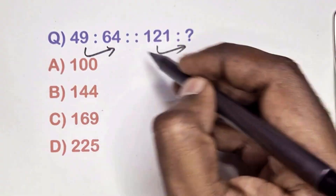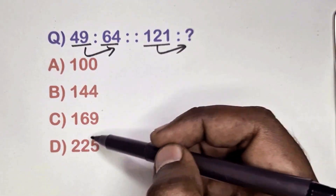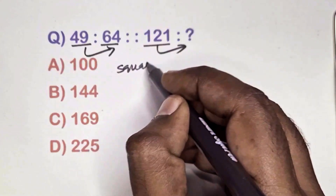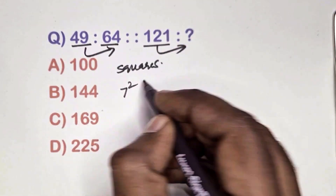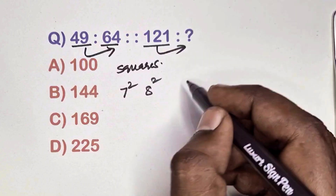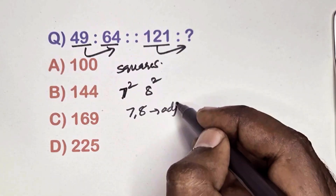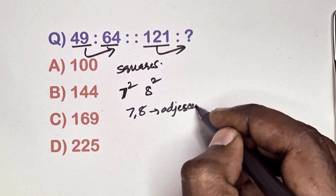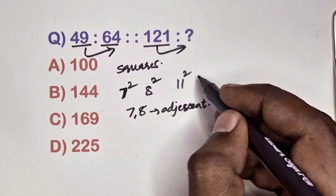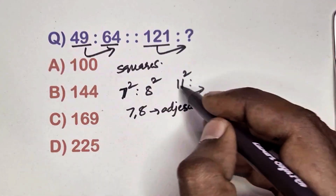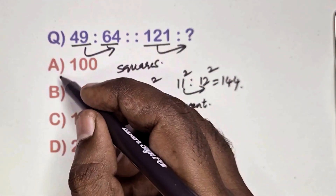Find the relation between these numbers. Look at the numbers 49, 64, 121 — these are square numbers, so we use square priority. 49 is 7 squared, 64 is 8 squared, and 7 and 8 are adjacent numbers. These squares are also adjacent. 121 is 11 squared, so the adjacent number is 12, and 12 squared is 144. Option B is the correct answer.